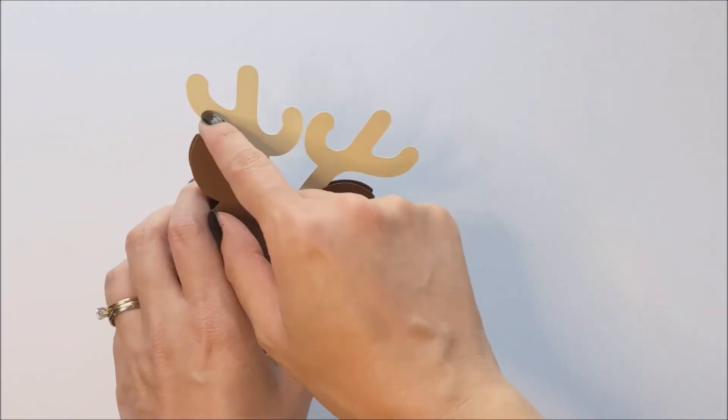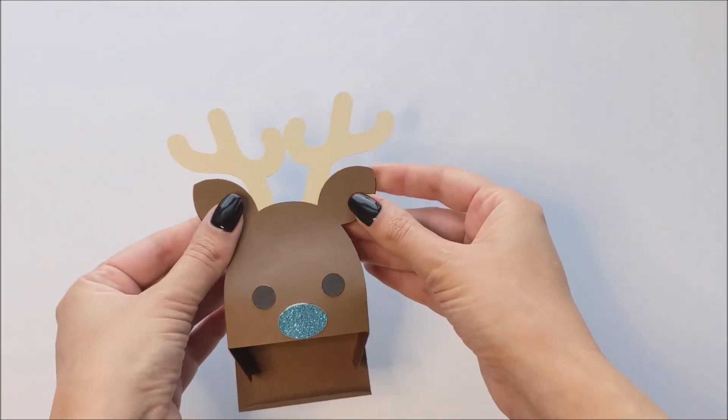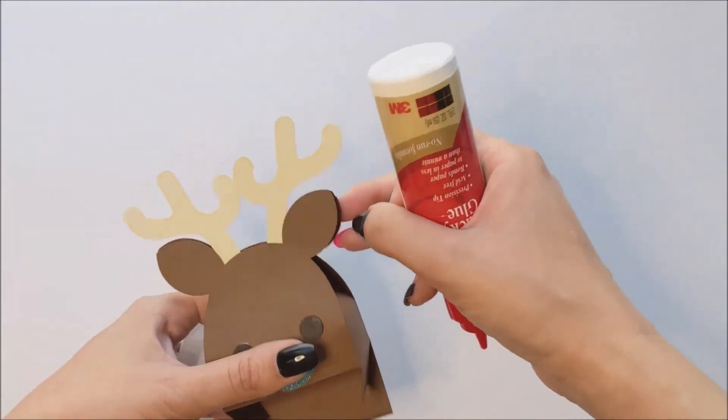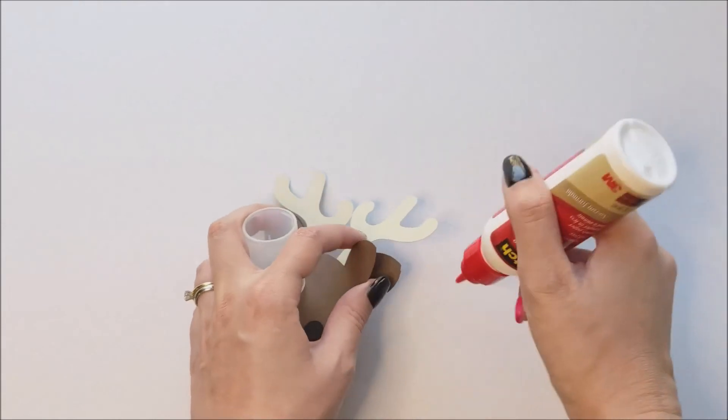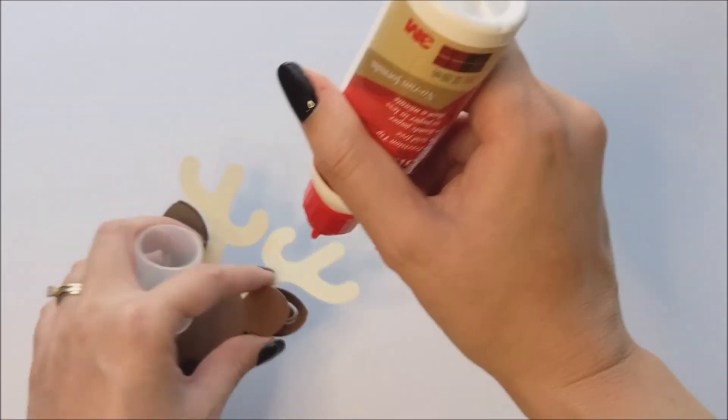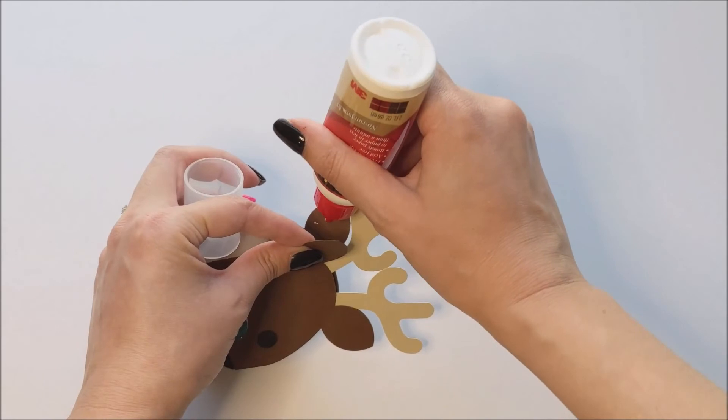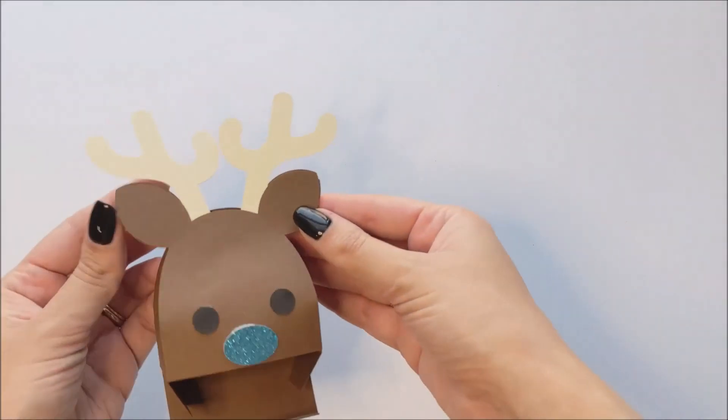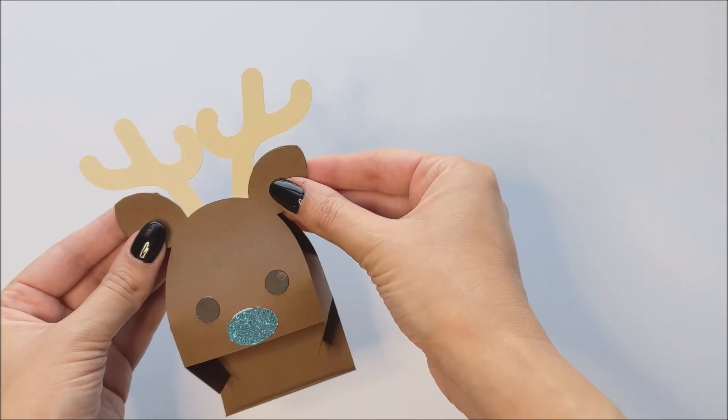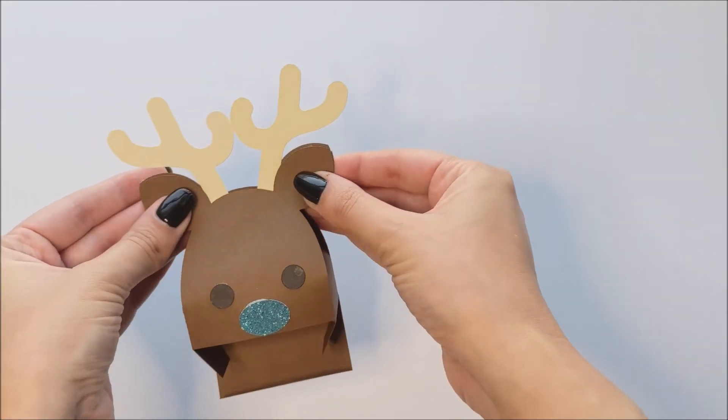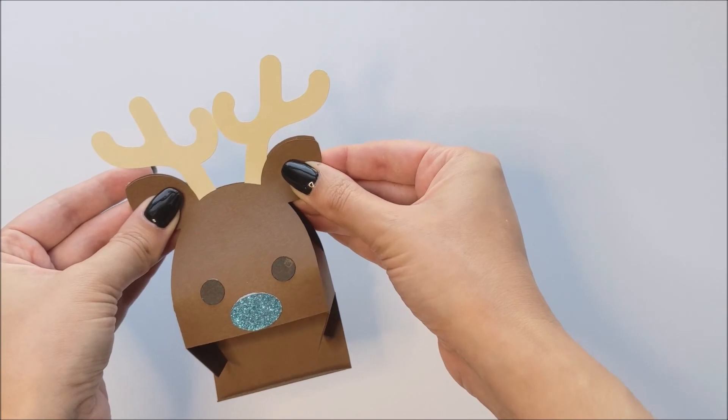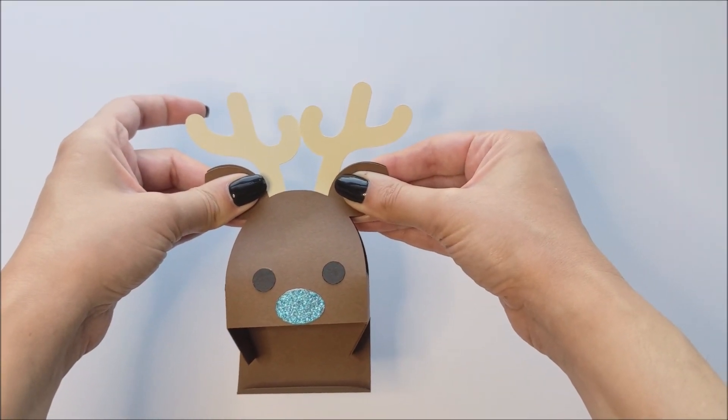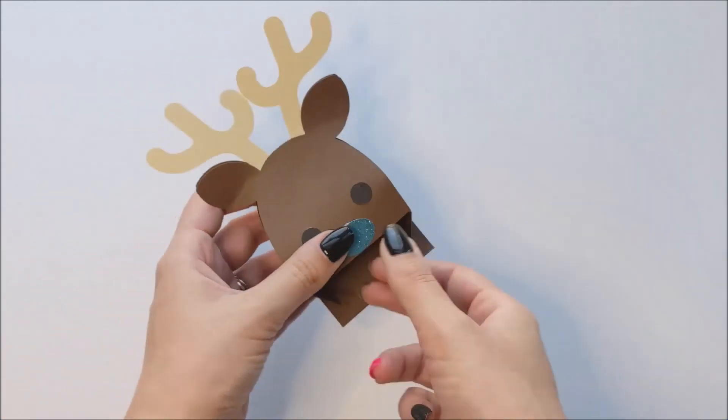next I'm going to put a teeny bit of glue on the ears and glue those together. And that will just kind of help additionally to keep the box together. I just want to align those ears as best we can. It doesn't have to be perfect, but just try and get it as close as you can.